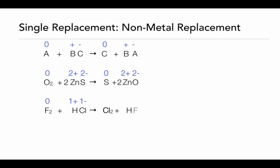Fluorine and hydrogen are going to react to form hydrogen fluoride. Hydrogen comes first because it has the positive cation, and fluorine is the anion — we always write the positive first and negative second. We lose the subscript 2 on the fluorine because hydrogen is 1 plus and fluorine is 1 minus. We balance the charges to make the formula correct, then add coefficients to make sure the reaction is balanced overall. In the final equation, fluorine goes from a zero oxidation state to 1 minus, chlorine goes from 1 minus to zero, and hydrogen stays the same.